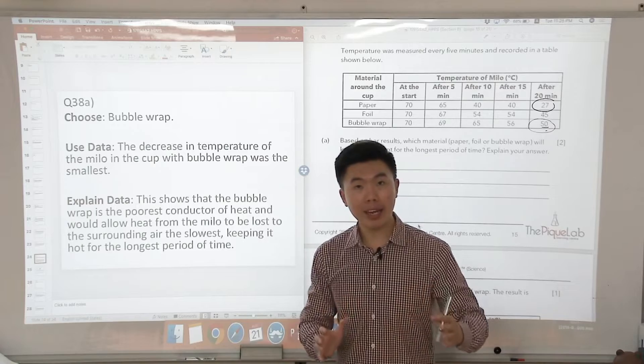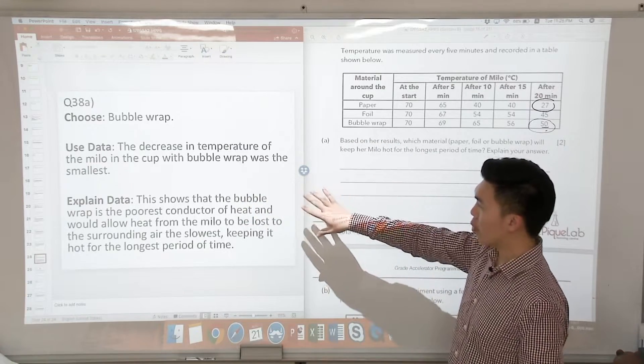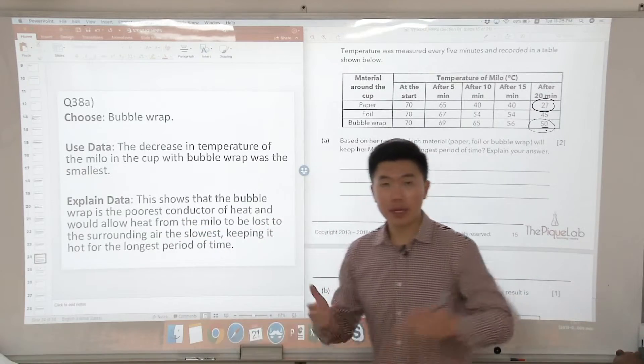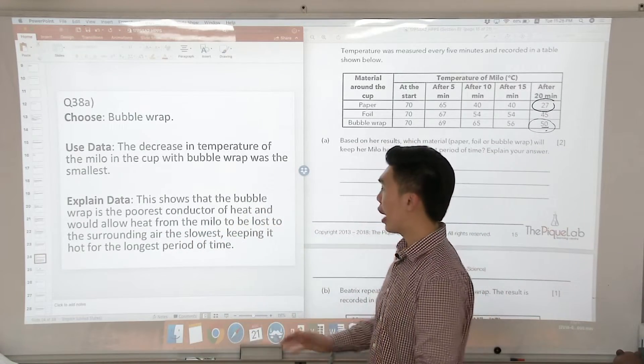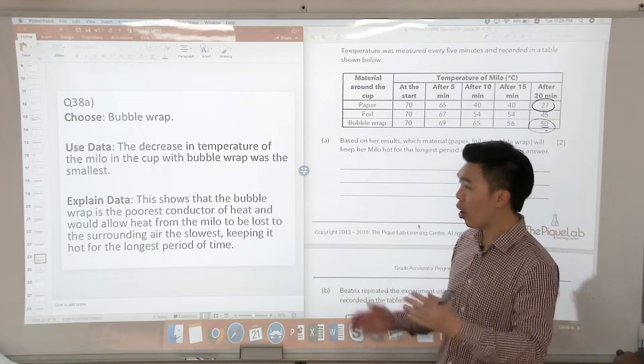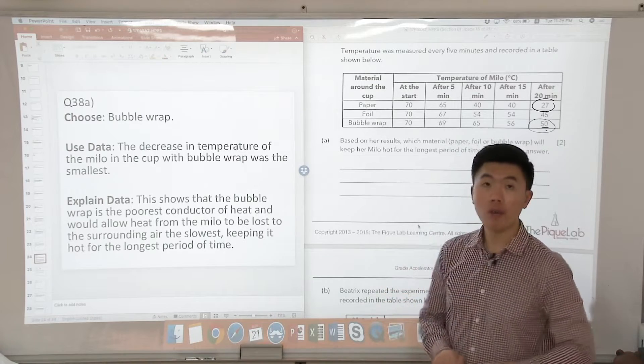So now we are going to explain using the science concept. This shows that the bubble wrap is the poorest conductor of heat. And what does that mean? It would allow heat from the Milo to be lost to the cooler surrounding air the slowest and keep the hot Milo hot for the longest period of time.